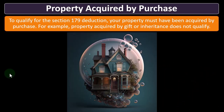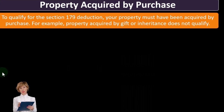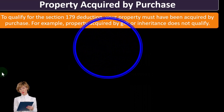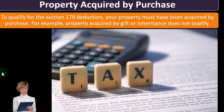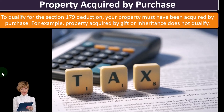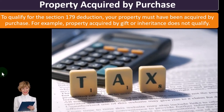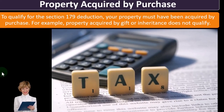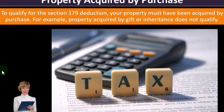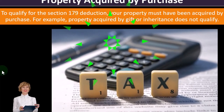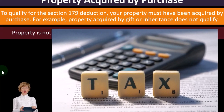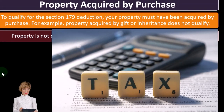With an inheritance, if someone dies and leaves you property, the estate may be subject to estate tax if the individual was wealthy. However, when you inherit the property, you may receive a step-up in basis, meaning you can put it on the books at a higher value. That's a whole separate issue, but the key point is: you cannot take the Section 179 deduction for inherited or gifted property — you have to buy it for 179 to apply.